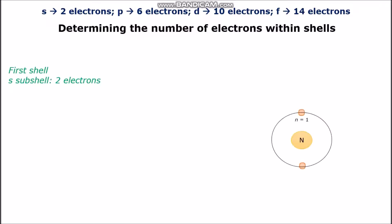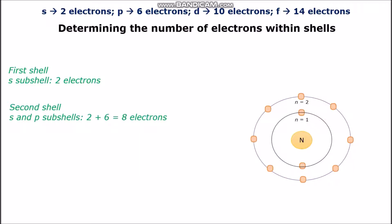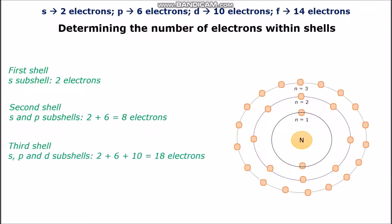Let's do some examples. The first shell can only contain the S sub-shell, which has a total of 2 electrons. The second shell can contain the S and P sub-shells, which in total has 8 electrons — 2 electrons within the S sub-shell and 6 electrons within the P sub-shell, giving 2 plus 6 equals 8 electrons. The third shell contains only the S, P, and D sub-shells, given a total of 18 electrons.